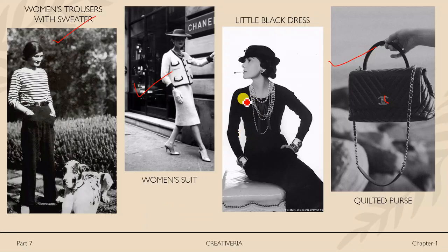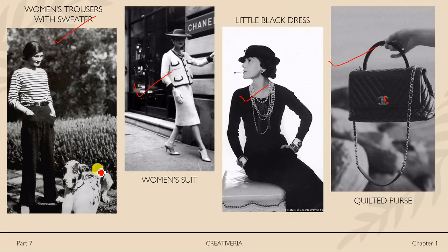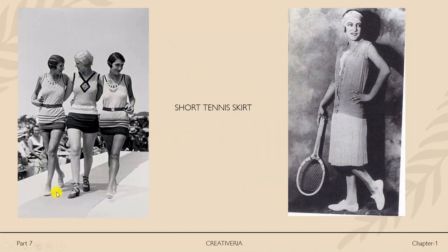Chanel's string of large pearls was her main accessory and continues to be extremely popular. Next is Jean Patou, who along with Coco Chanel was one of the most influential couturiers in Paris in the 1920s. His designs were striking for their simplicity. He understood that sports were a major lifestyle influencer and modernized and simplified sports clothing. He designed the shorter tennis skirt, which was considered a radical design at a time when covered arms and legs were the rule for women even during sport.